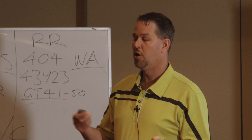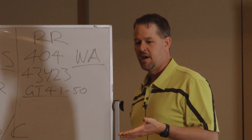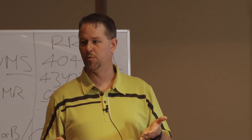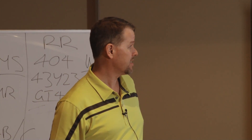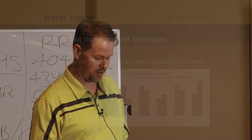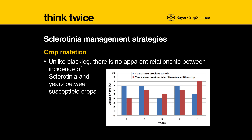Crop rotation is another agronomic choice that a grower makes and it's a fairly successful cultural practice used to deal with many diseases. But it's not really a good cultural tool to manage sclerotinia. There's really no relationship between the incidence of sclerotinia and the years between susceptible crops. This graph shows diseased plants versus years since the previous canola crop or previous sclerotinia-susceptible crop. There's no relationship — it doesn't matter whether it's one year or five years.